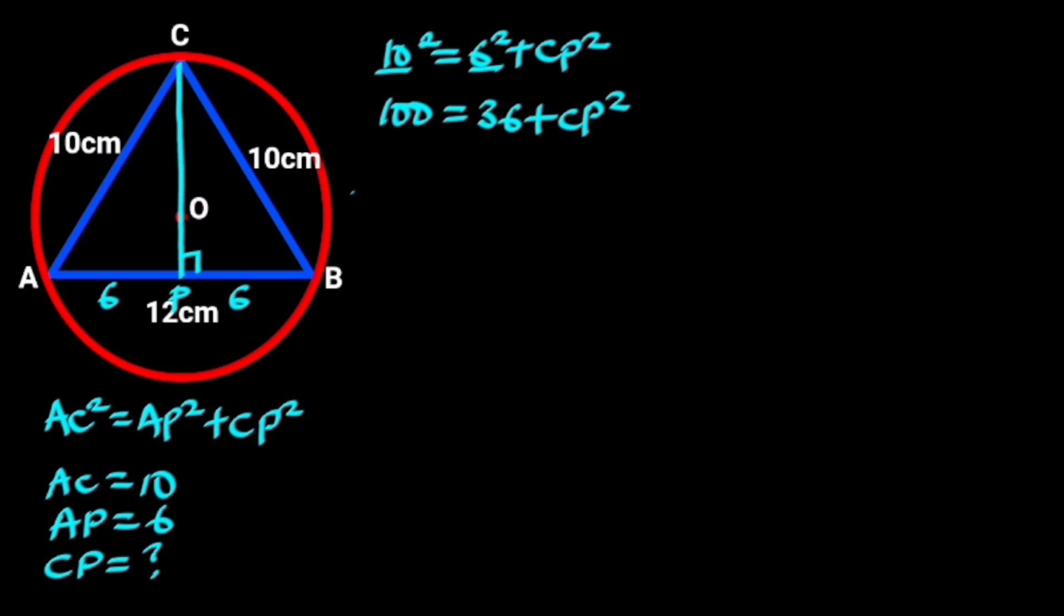To find CP, we collect like terms. It follows that CP square equals 100 minus 36. 100 minus 36 is 64, so CP square equals 64. Next we take the square root of both sides. Doing so will give us CP equals square root of 64 which is 8 cm.